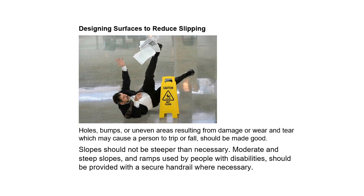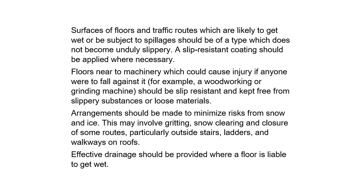When designing surfaces to reduce slipping: holes, bumps, or uneven areas resulting from damage or wear and tear which may cause a person to trip or fall should be made good. Slopes should not be steeper than necessary. Moderate and steep slopes and ramps used by people with disabilities should be provided with a secure handrail where necessary. Surfaces of floors and traffic routes which are likely to get wet or be subject to spillages should be of a type which does not become unduly slippery.